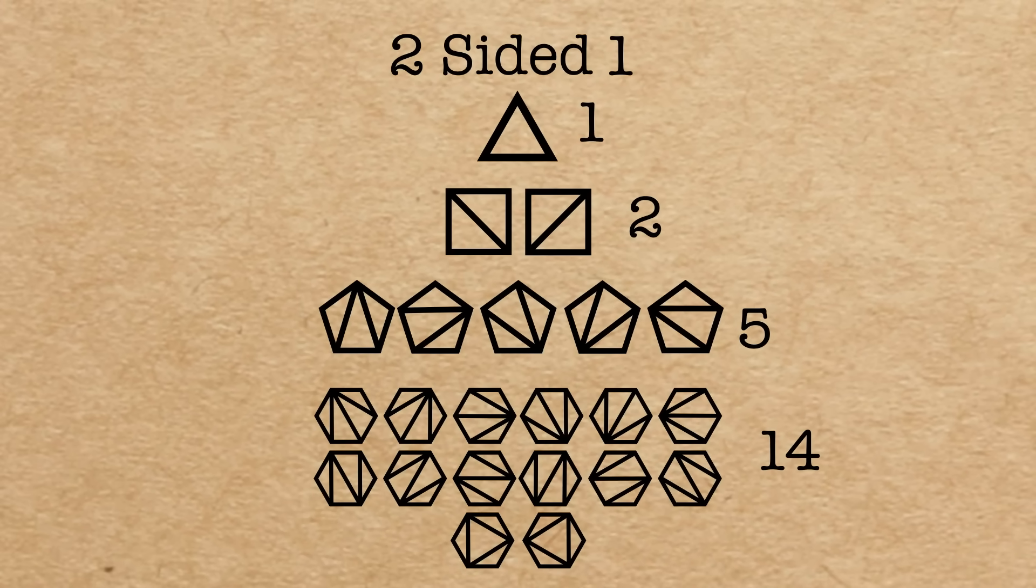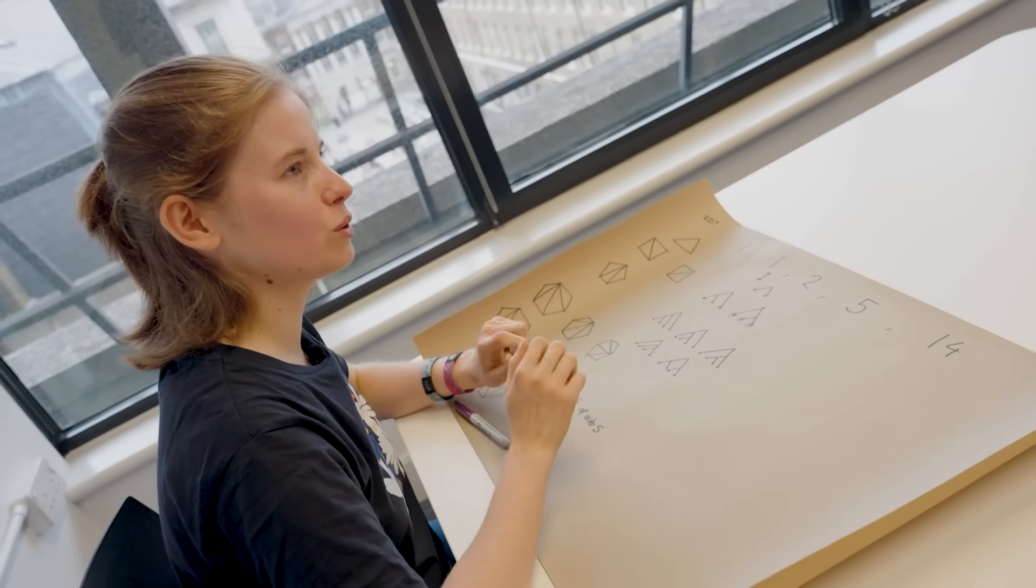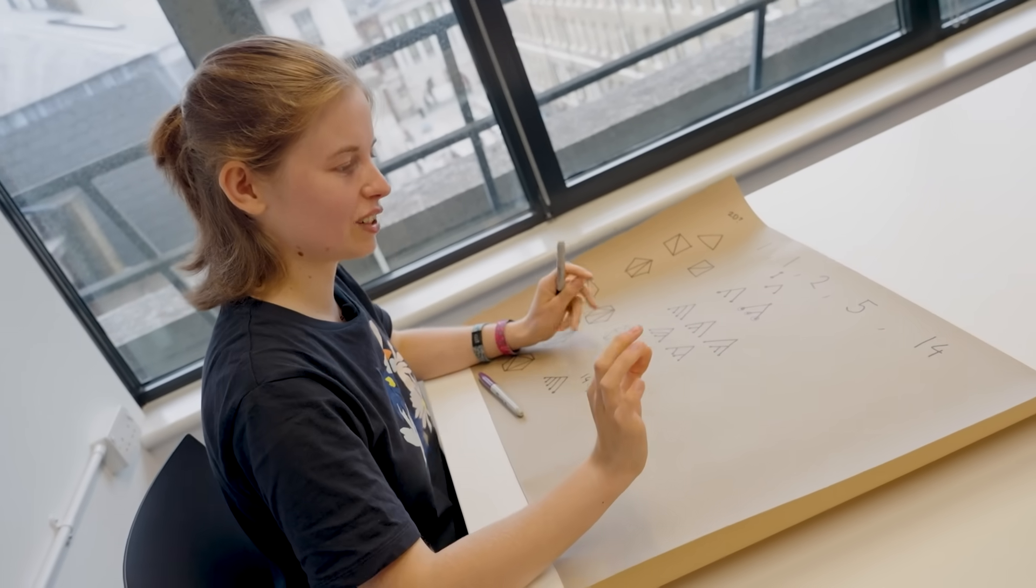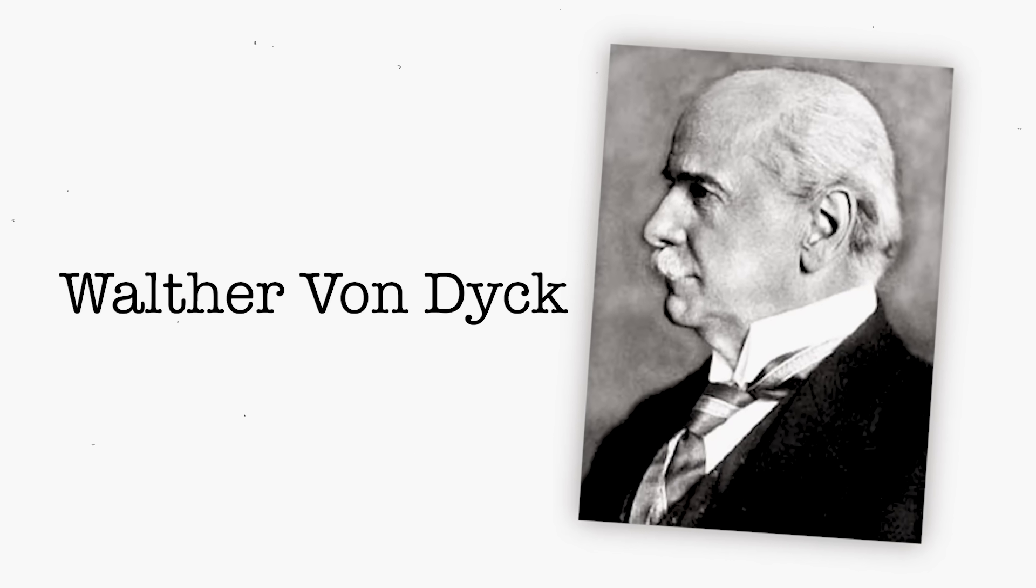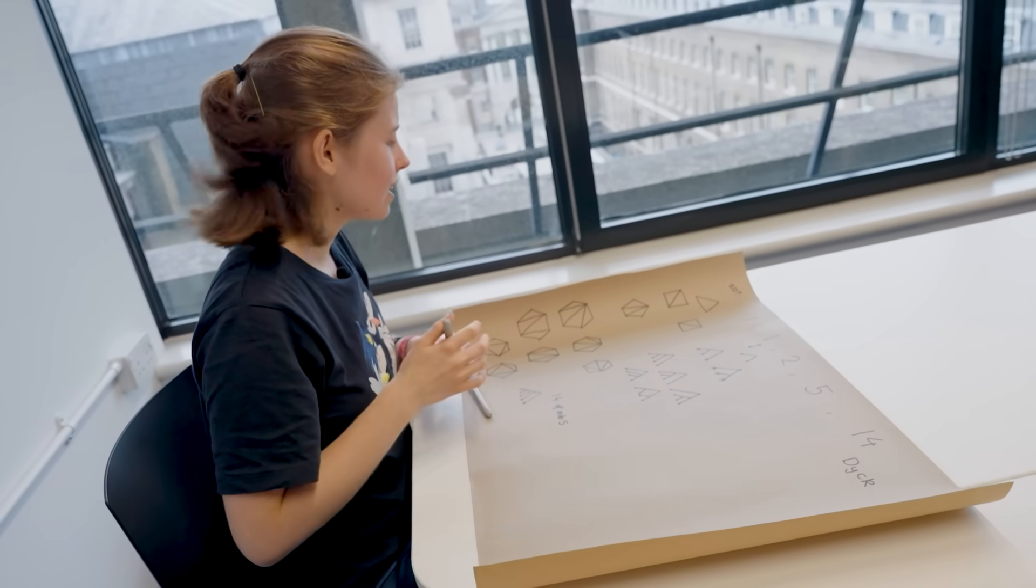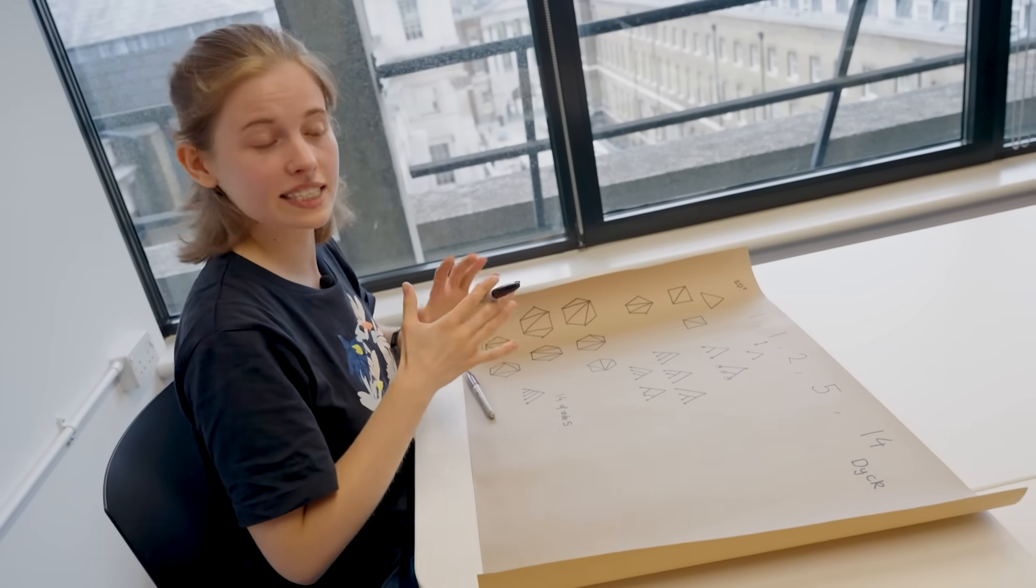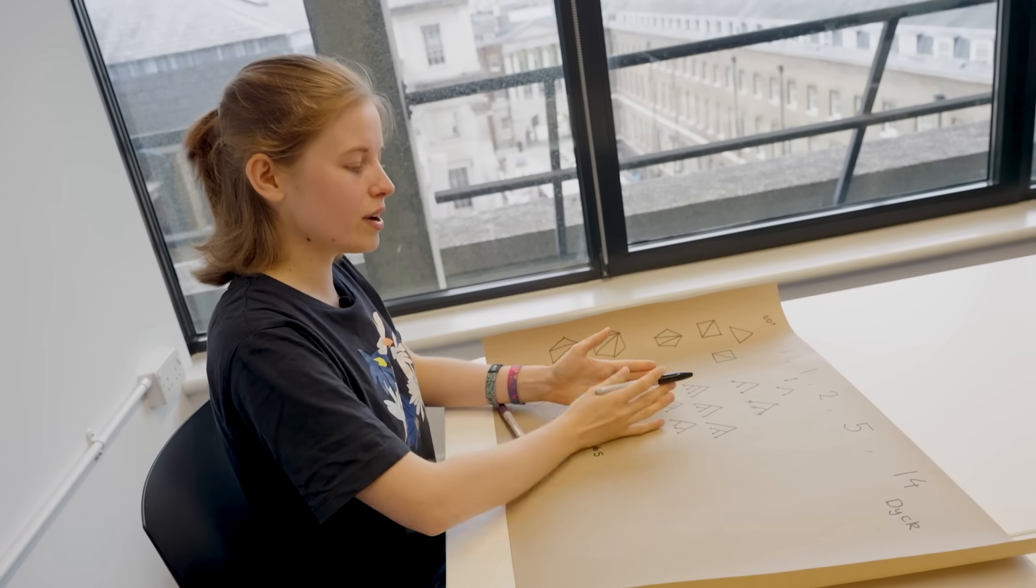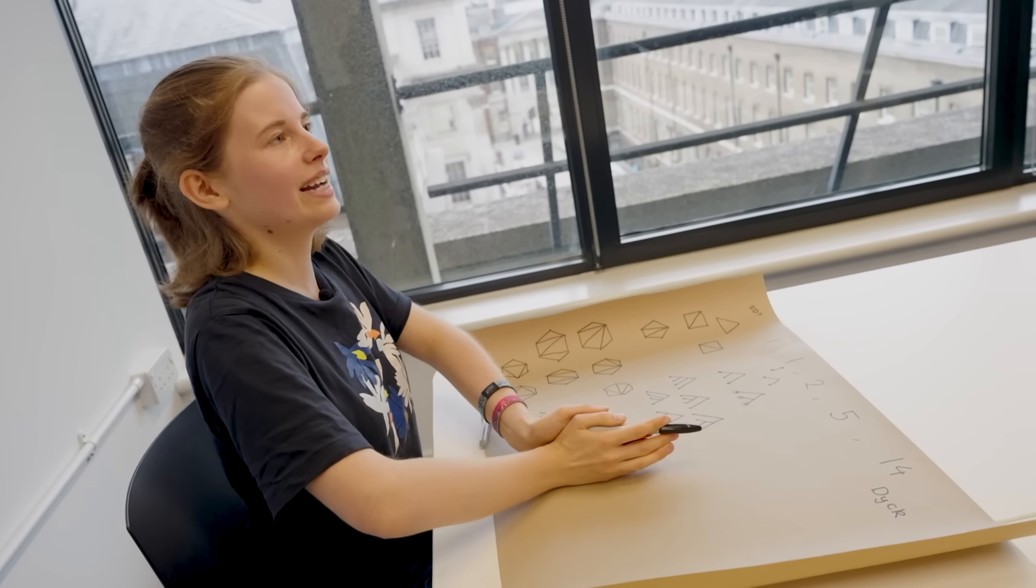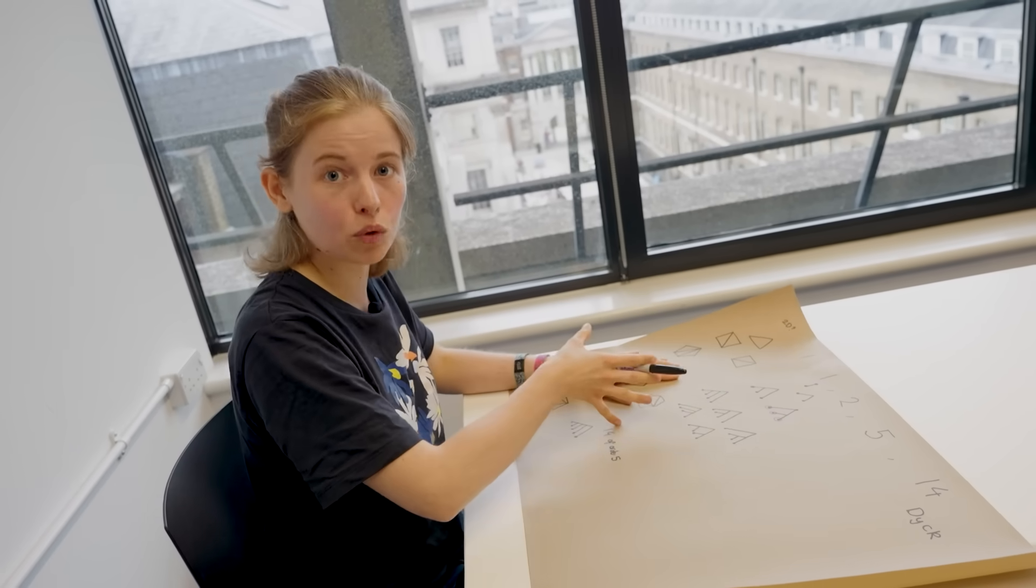So this third problem involves something called, you've got to get the German pronunciation right, Dyck words, named after the mathematician Dyck, pronounced with a long i sound in the middle. So Dyck words are made up of the same number of x's and y's but there's a rule. At no point in the word can you have had more y's than x's before that point. So for example something like x x y y is allowed.